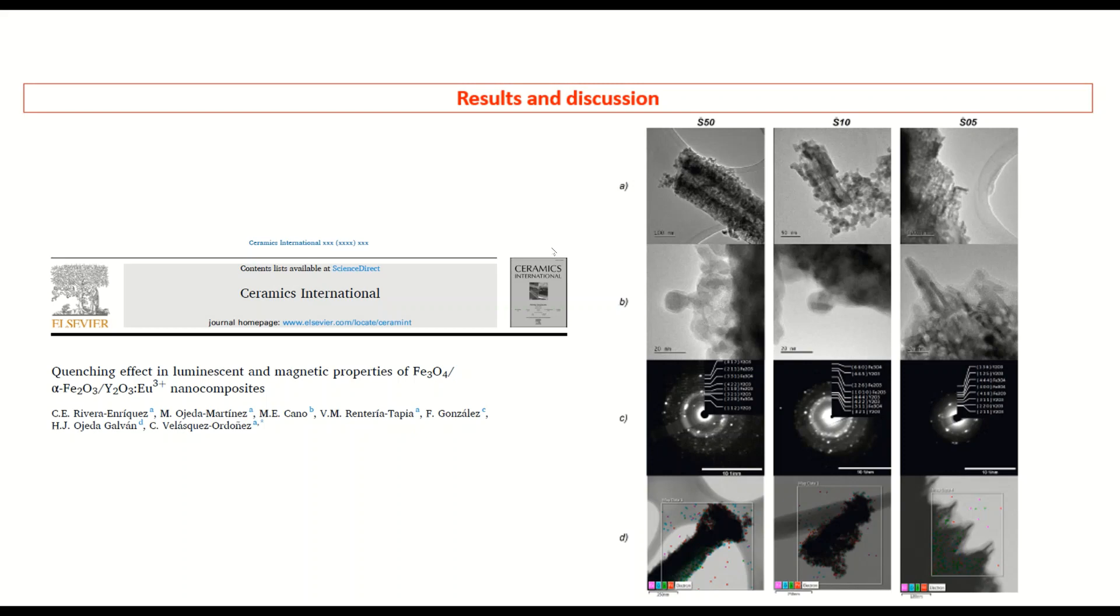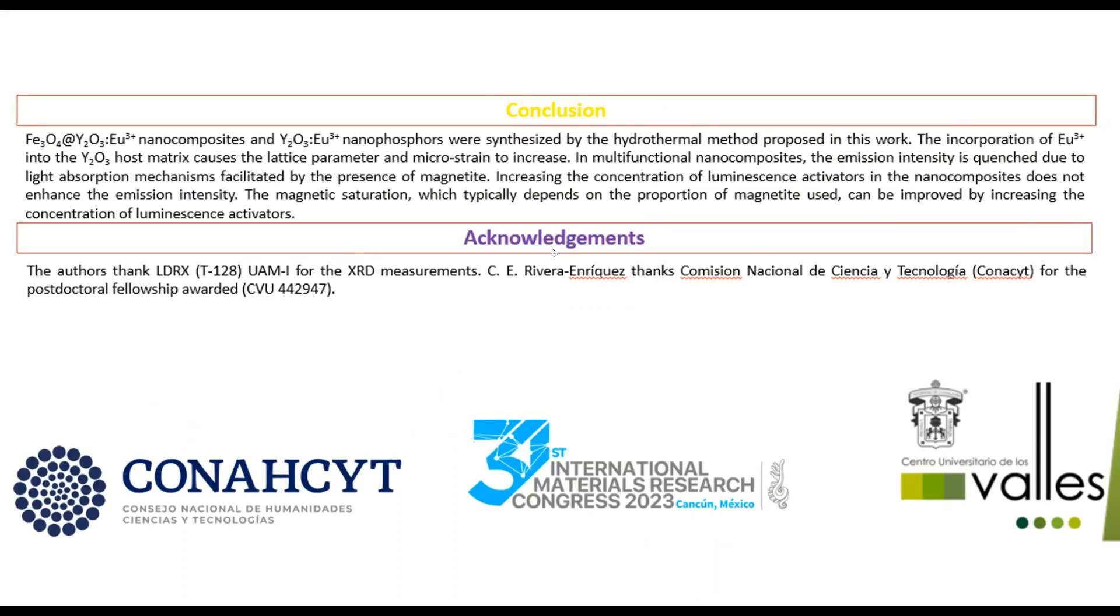In conclusion, by varying the amount of dopant, it is possible to improve the magnetic properties that are traditionally achieved by changing the ratio of the components.